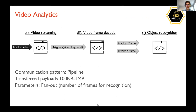The video analytics application consists of three functions. The first is invoked by the client with a hello message, then injects a video fragment into the second function, which decodes frames and invokes object recognition on each of them. The communication pattern is a pipeline, even though it is written in a synchronous way, and a parameter allows changing the fan-out of object recognition.